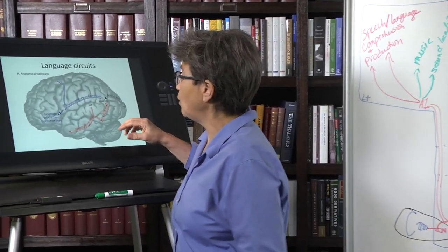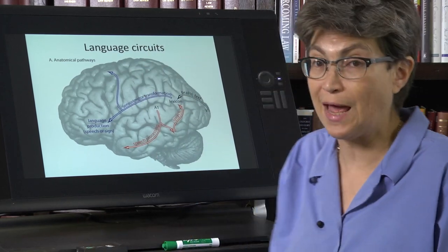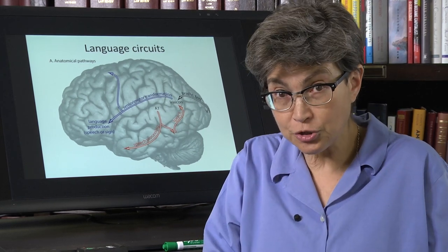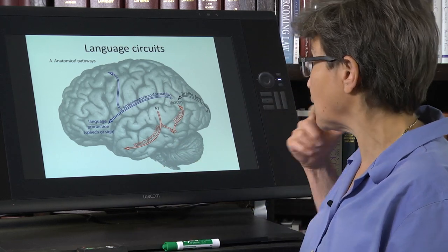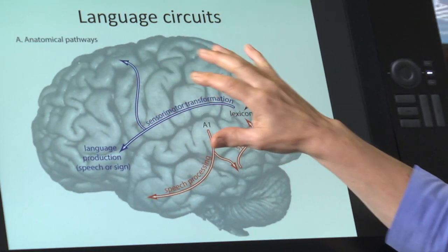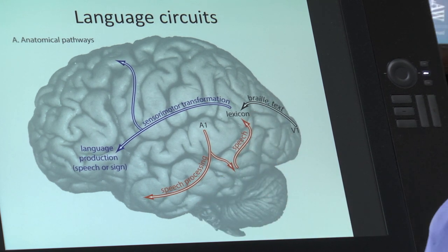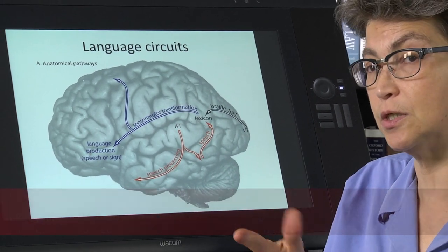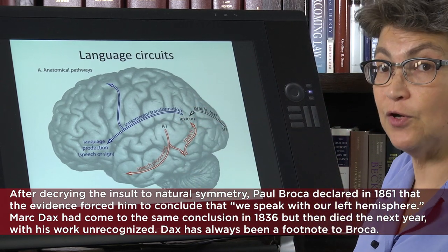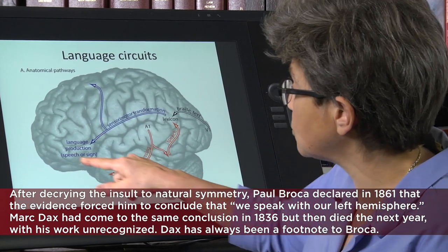When we come over to the slide, what you can see is that there are ventral and dorsal pathways that support the two major language functions, comprehension on one hand and production on the other hand. So here's auditory cortex. This is showing the left hemisphere. This was first proposed correctly by Broca in 1860 to 1865. And what Broca said is that the left hemisphere is responsible for language production, for speech production.